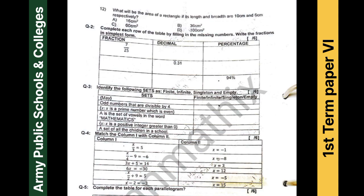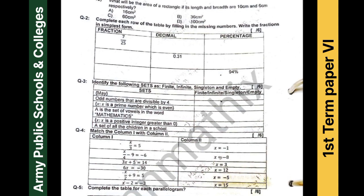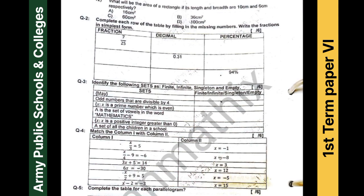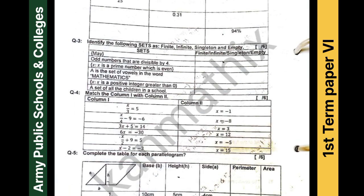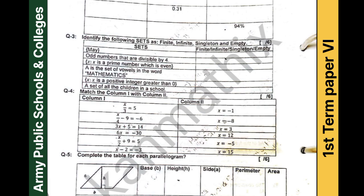Question number two: complete each row of the table by filling in the missing numbers. A fraction 7/25 is given — you have to convert it into decimal and then into percentage. In the second row, a decimal is given — you have to write the fraction and then the percentage. In the third row, a percentage is given — you have to express it as a fraction and decimal. It's a simple question.